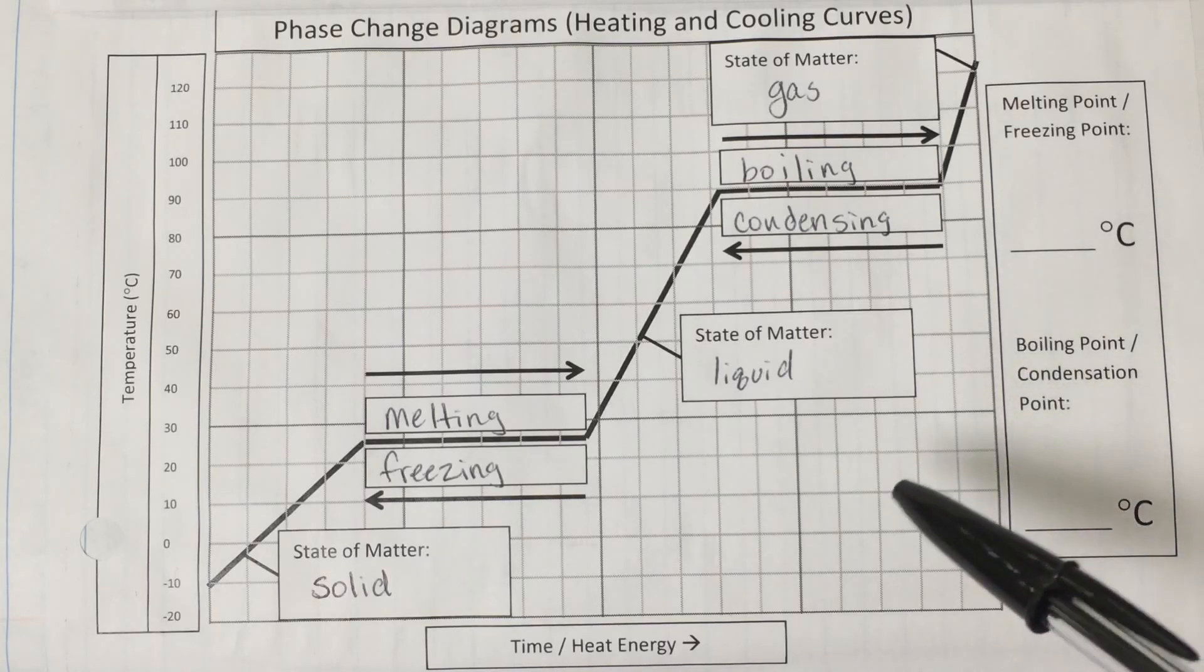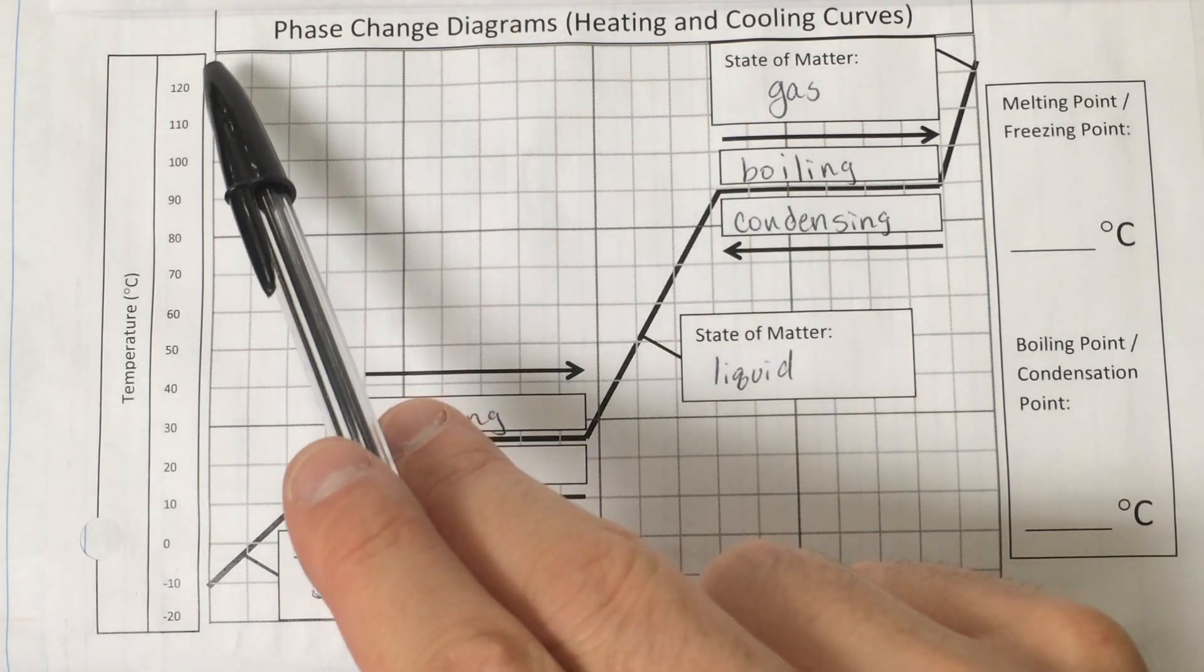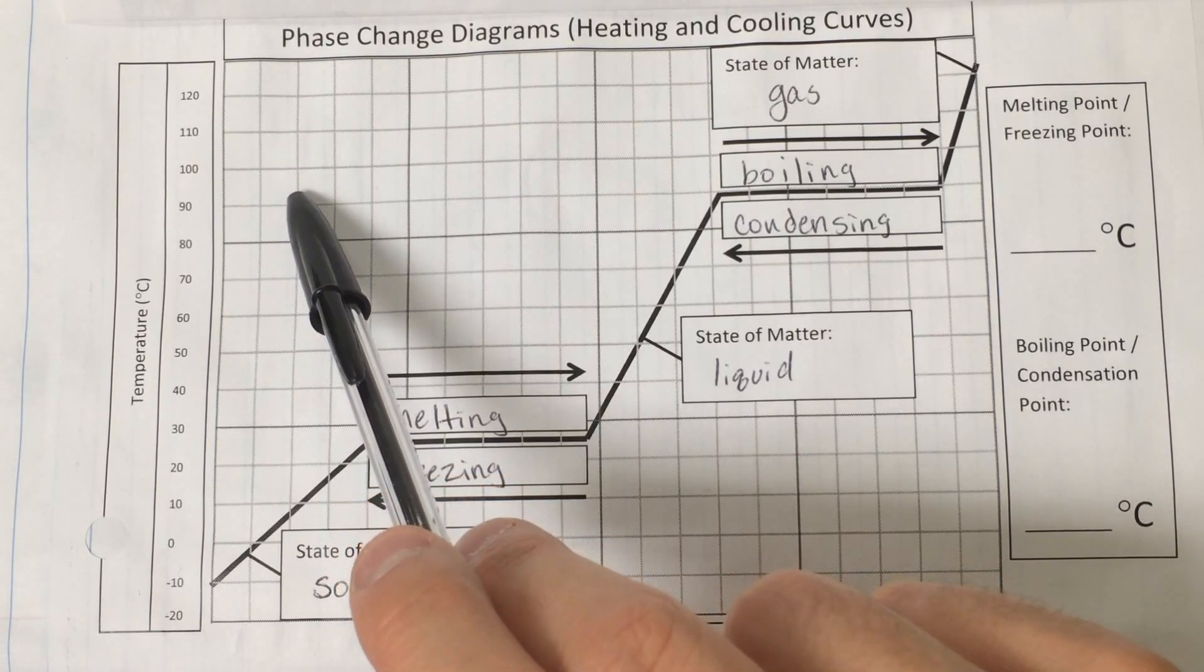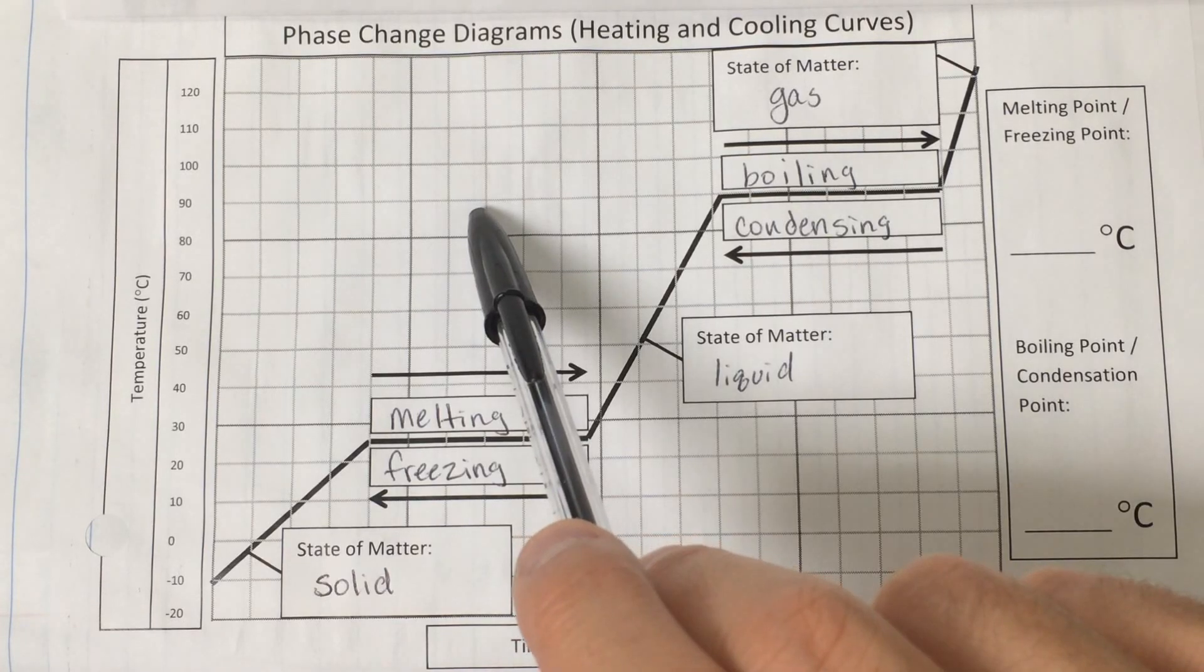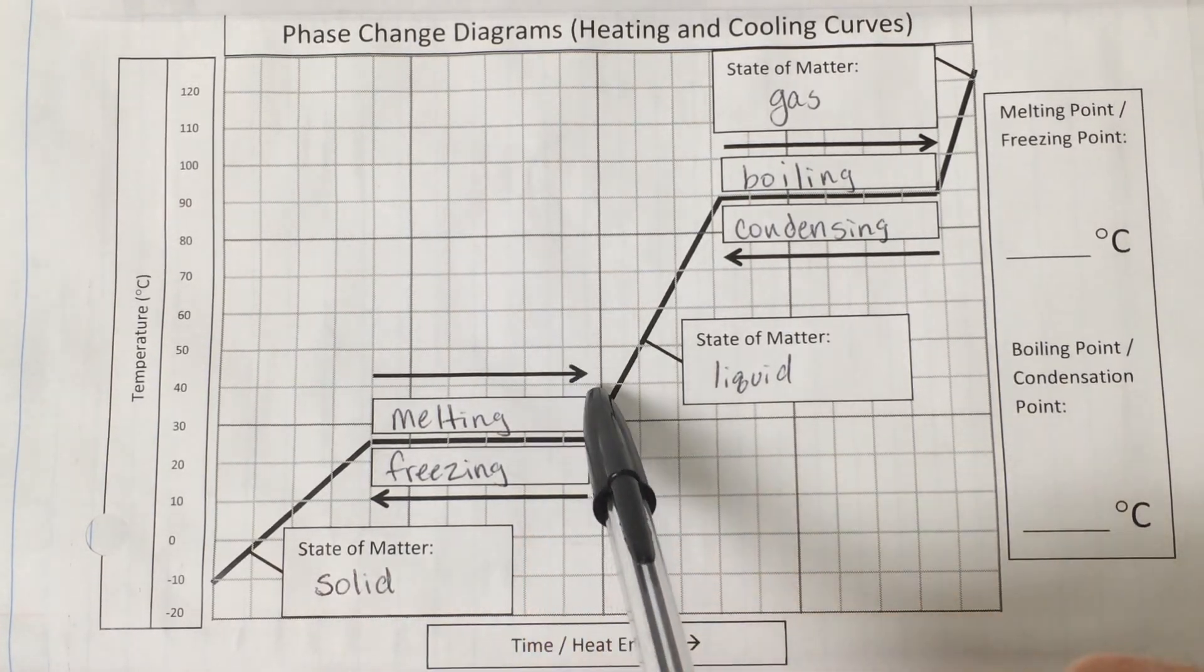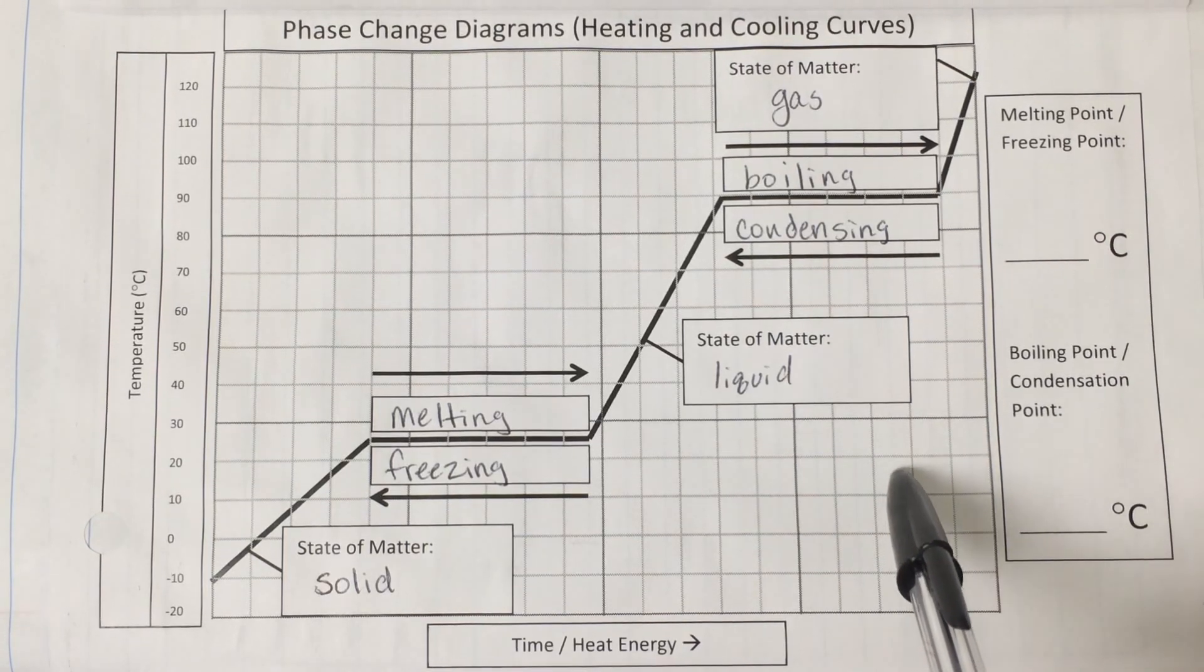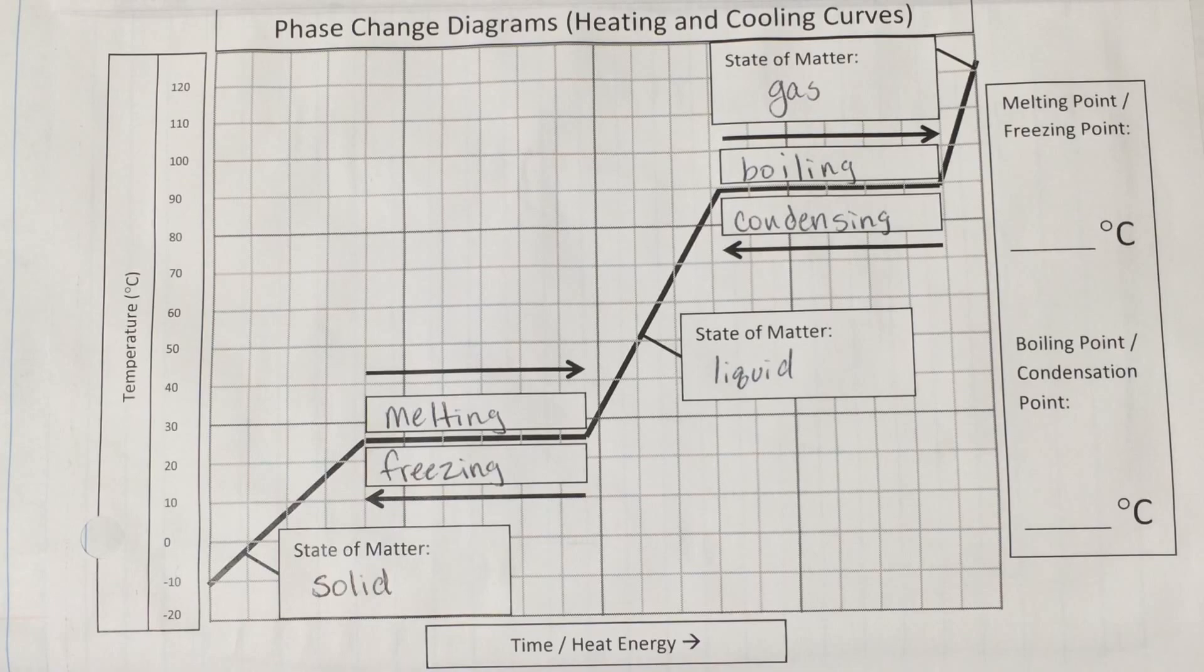If this were a cooling curve, it would look exactly the same, but it would go in the opposite direction. So we would start up here with the gas, and as we cooled it, instead of heating it, the temperature would drop until it hit the condensing point, and then it would level off until that gas completely condensed into a liquid, and then it would continue to cool until it hit the freezing point, and then it would undergo the freezing process until it had completely solidified, and then we could cool it down even further than that. So it would look exactly the same, but be in the opposite direction.